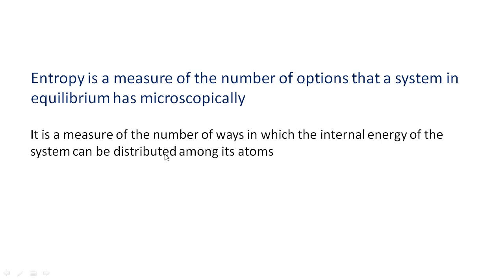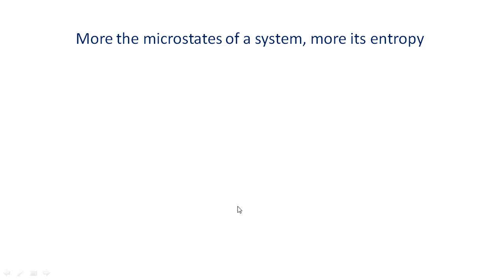Each microscopic way or option is called a microstate. So, we could say that more the microstates of a system, more its entropy.